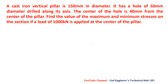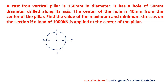For the second problem, we have a cast iron pillar 150 mm in diameter. A 50 mm diameter hole is drilled along its axis, but the center of the hole is offset 40 mm from the pillar's center axis.